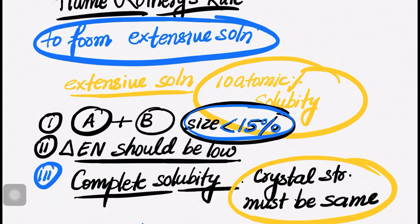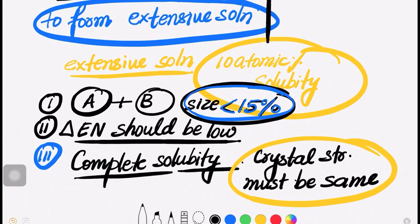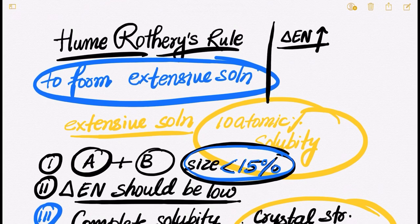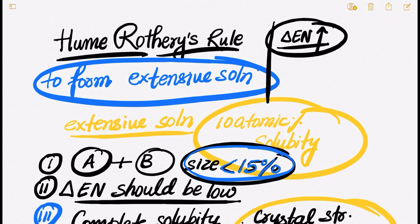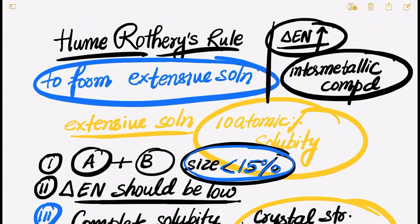One more question they can ask: if the electronegativity difference is very high, if delta EN is high, in that case which type of solution will be formed — will it form a solid solution? The answer is no. In that case, you will form an intermetallic compound. So if we have a very high difference in electronegativity, then we will form an intermetallic compound.